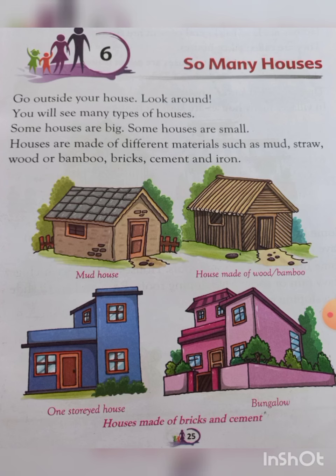Go outside your home, look around — you will see many types of houses. Some houses are big, some houses are small. Houses are made of different materials such as mud, straw, wood or bamboo, bricks, cement and iron. So all these houses are different.